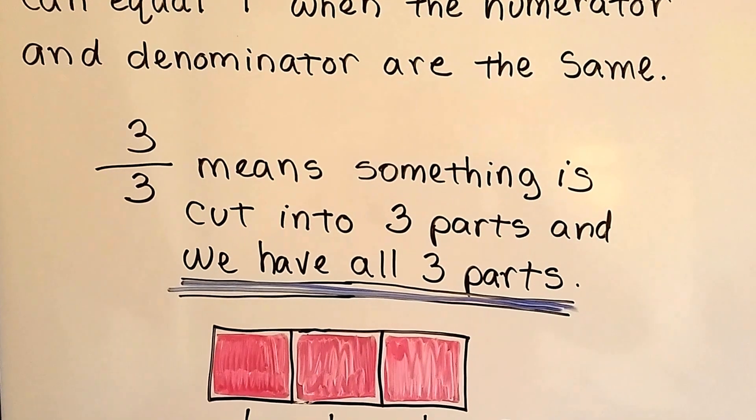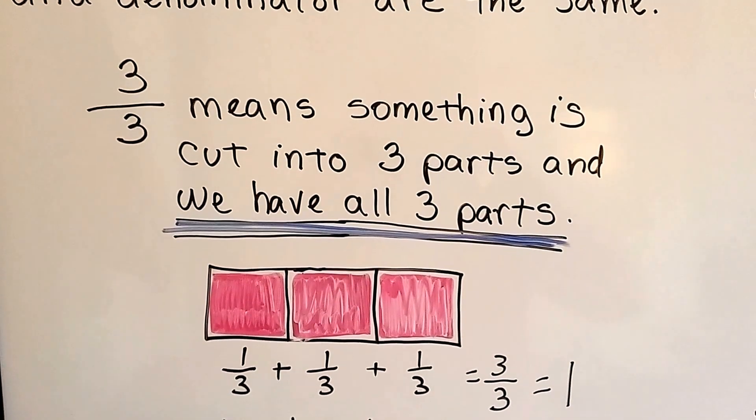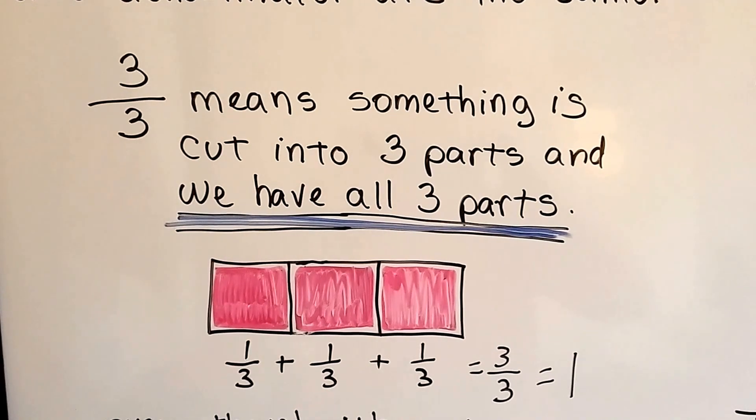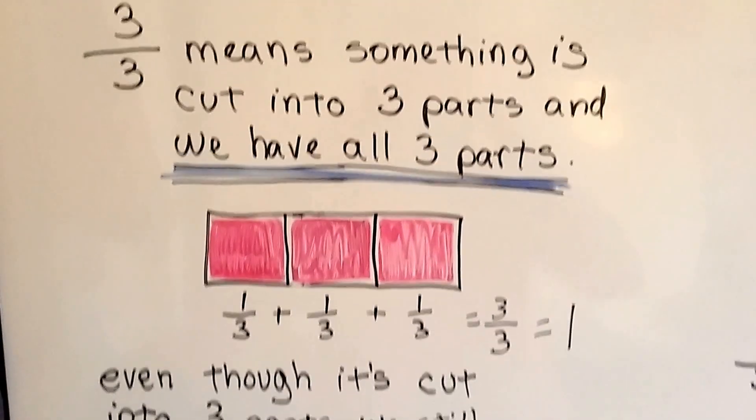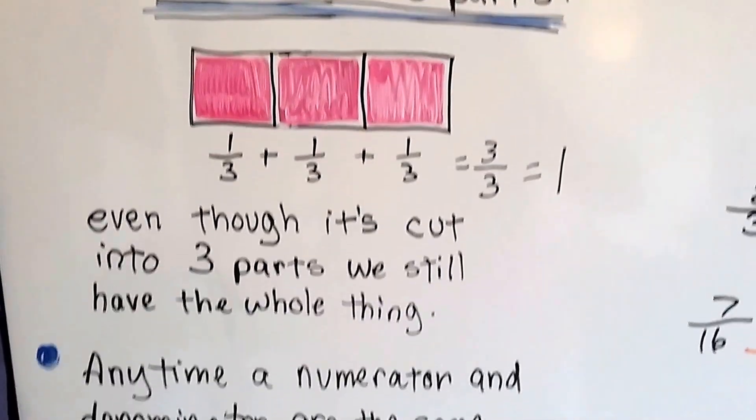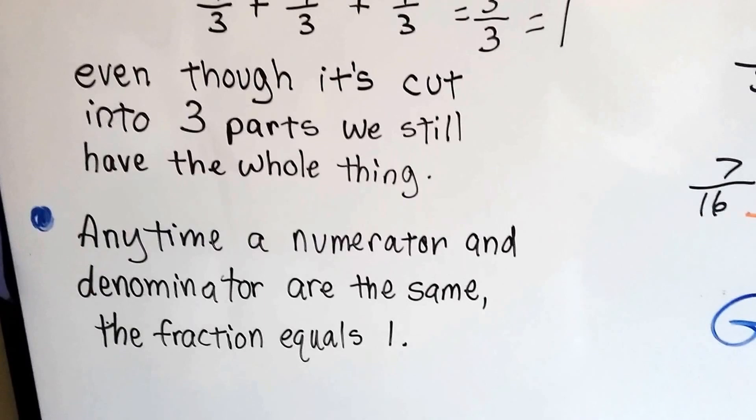Well, three-thirds means something is cut into three parts, and we have all three parts. One-third plus one-third plus one-third equals three-thirds. We have the whole rectangle. We have all the parts. So even though it's cut into three parts, we still have the whole thing. We have one. So remember, any time a numerator and denominator are the same, the fraction equals one.